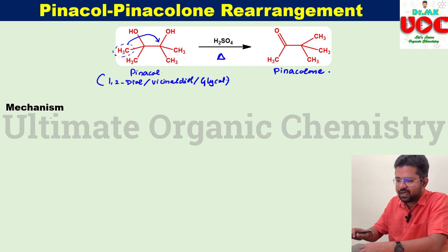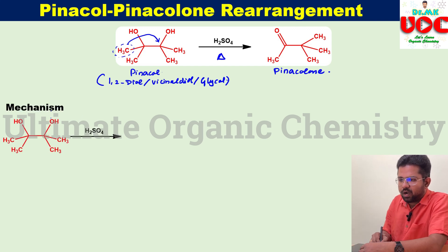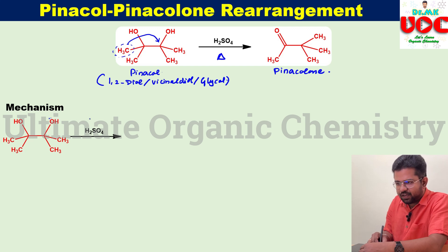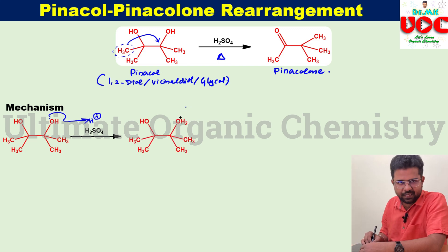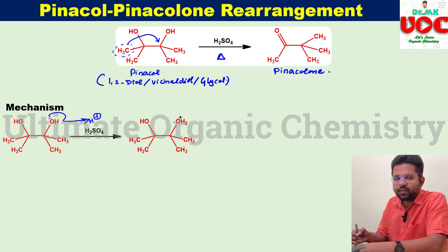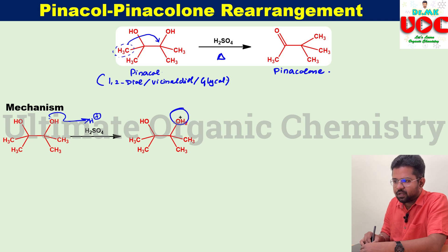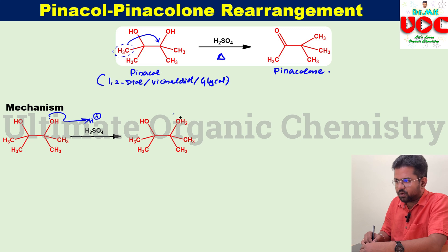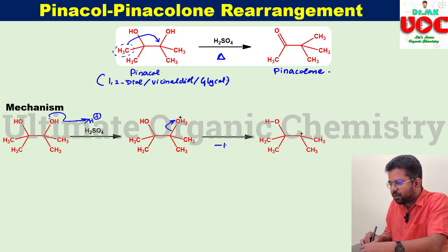Now let us discuss the mechanism. The mechanism involves initially this pinacol reacting with sulfuric acid, which will provide H+. So this lone pair of oxygen is getting protonated, leading to the formation of a species. You know that oxygen is the second most electronegative atom in the periodic table and which is carrying a positive charge here. So that means it will take the bonded electron and it will be leaving as a water molecule, leading to the formation of a carbocation intermediate.